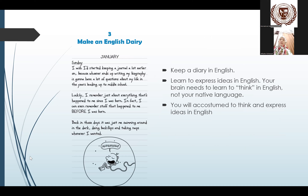The next slide is about making an English diary. This is an easy way for the basic speaker to make an English diary. So if you have your diary activity, you can write it down using English or that foreign language. Keep a diary in English. Learn to express ideas in English. Your brain needs to learn to think in English, not your native language. You will be accustomed to think and express ideas in English, which will help the basic speaker become accustomed to writing in their diaries.